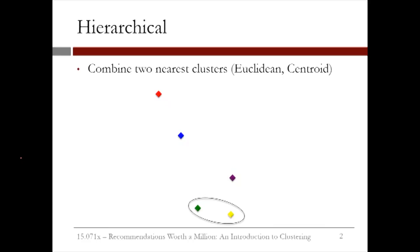Then hierarchical clustering combines the two nearest clusters into one cluster. We'll use Euclidean and centroid distances to decide which two clusters are the closest. In our example, the green and yellow clusters are closest together. So we would combine these two clusters into one cluster. So now the green cluster has two points, and the yellow cluster is gone.